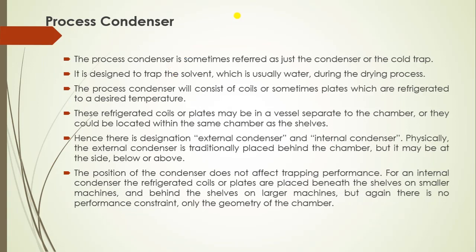Next is the process condenser. The process condenser is sometimes referred to as just the condenser or cold trap. It is designed to trap the solvent, which is usually water, during the drying process. That means when sublimation takes place during primary and secondary drying, the role of the condenser is to collect the vapor. The process condenser generally consists of coils or sometimes plates which are refrigerated to a desired temperature. These refrigerated coils or plates may be placed in a vessel separate to the chamber, or they could be located within the same chamber as the cells — meaning the process condenser can be outside or inside of the cabinet or drying chamber. Hence, they are designated as external condenser or internal condenser.